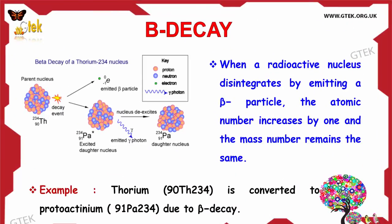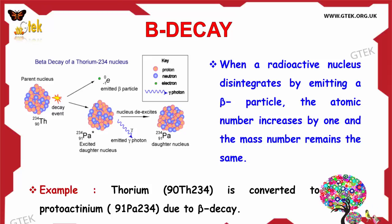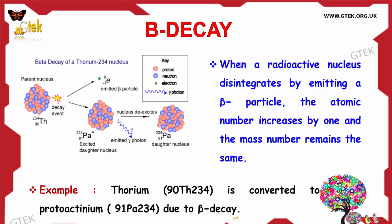Now let us see about Beta decay. When a radioactive nucleus disintegrates by emitting a Beta particle, the atomic number increases by 1 and the mass number remains the same. For example, Thorium-234 is converted to Protactinium-234 due to Beta decay.